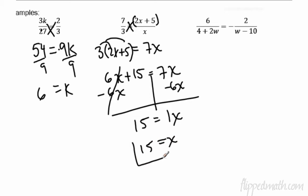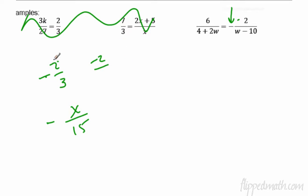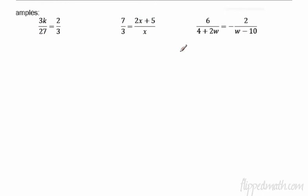Now this one looks more complicated. One reason I picked this problem is because of this little negative right here. A lot of students get confused by what to do with that negative. If you have a negative in front of a fraction, like negative two-thirds or negative x over 15, or in this case negative 2 over (w - 10), whenever you have a negative, just put it in the top. You can put it in the top or bottom, but not both. So I'm going to rewrite this as 6 over (4 + 2w) equals negative 2 over (w - 10).